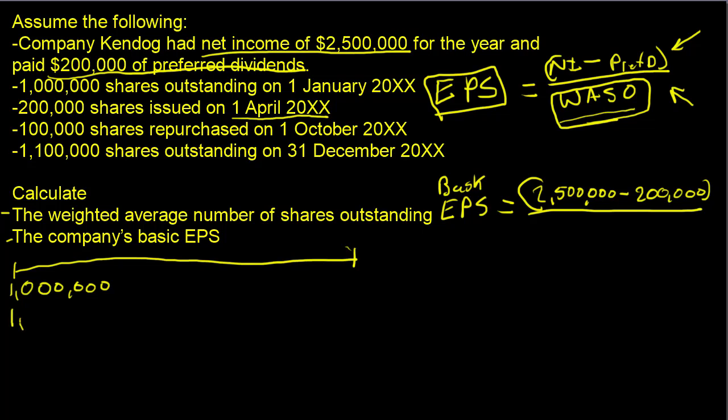In April, we go from 1 million to 1,200,000 shares. So what was the time period where the 1 million shares were outstanding? That's January, February, and March — three months. So we do 3 over 12 months, meaning we had 1 million shares outstanding for three months out of the 12 months in the year.